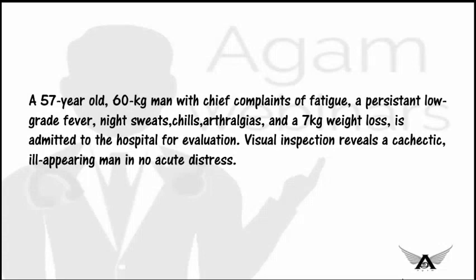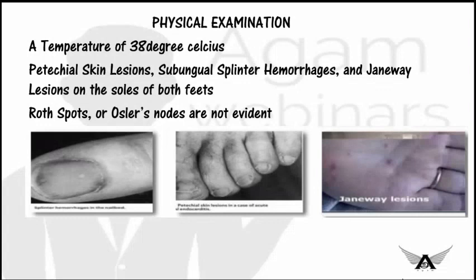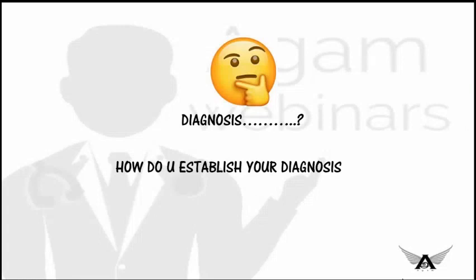Visual inspection reveals a cachectic ill-appearing man in no acute distress. On physical examination, the patient is found to have a temperature of 38 degrees Celsius, petechial skin lesions, subungual splinter hemorrhages, Janeway lesions on the soles of both feet, whereas Roth spots and Osler nodes are not evident. We will be learning about these features in this video, and after seeing this video you will be able to come to a diagnosis from the above findings.